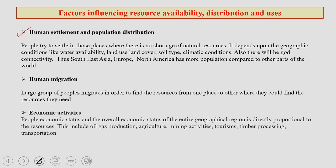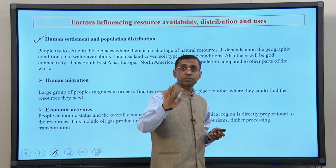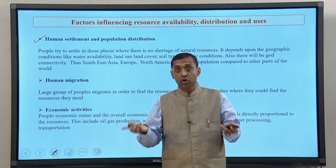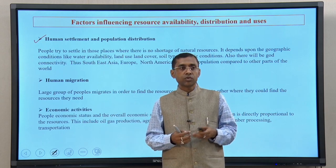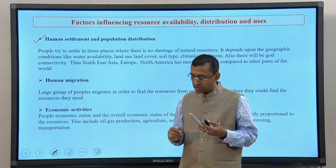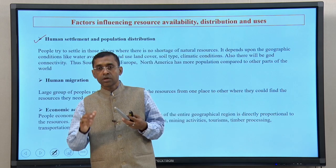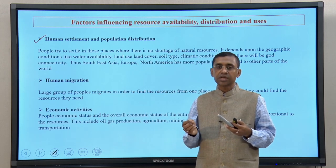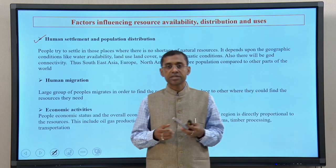The first factor is human settlement and population distribution. People normally try to settle in those places where there are plenty of resources available — no shortage, lots of water, good quality water, good quality soil. If you look back at history, the majority of civilizations actually initiated in those areas which were very rich and endowed with different kinds of natural resources,